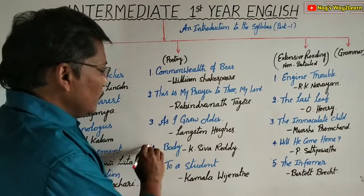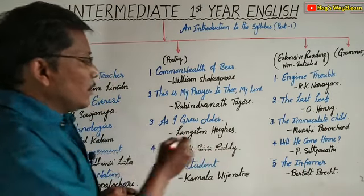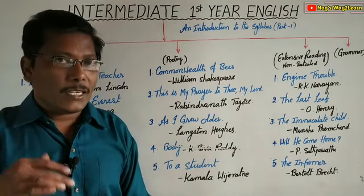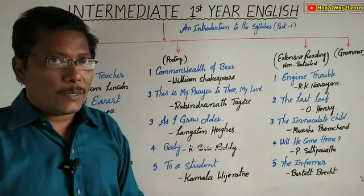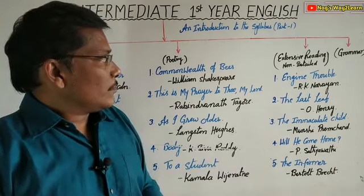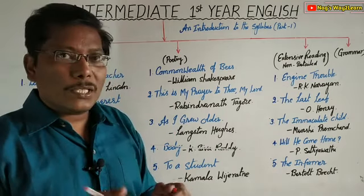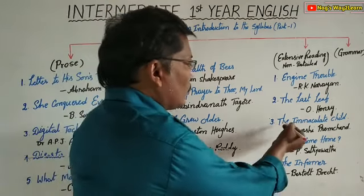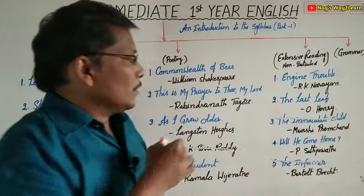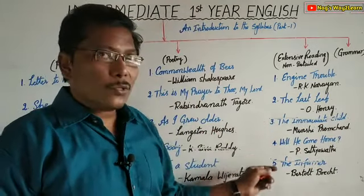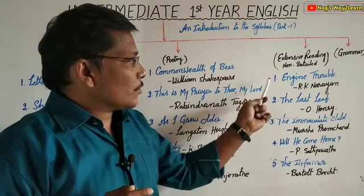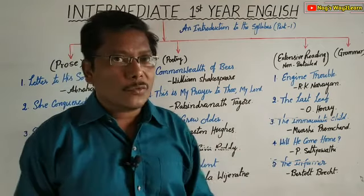In the Poetry section, the fourth poem, 'Body' written by K. Shivareddy, has also been deleted from the syllabus this academic year due to the COVID-19 pandemic. And in Extensive Reading, two stories have been deleted: the third one, 'The Immaculate Child', and the fifth one, 'The Informer'. It is enough to study just the first, second, and fourth stories.